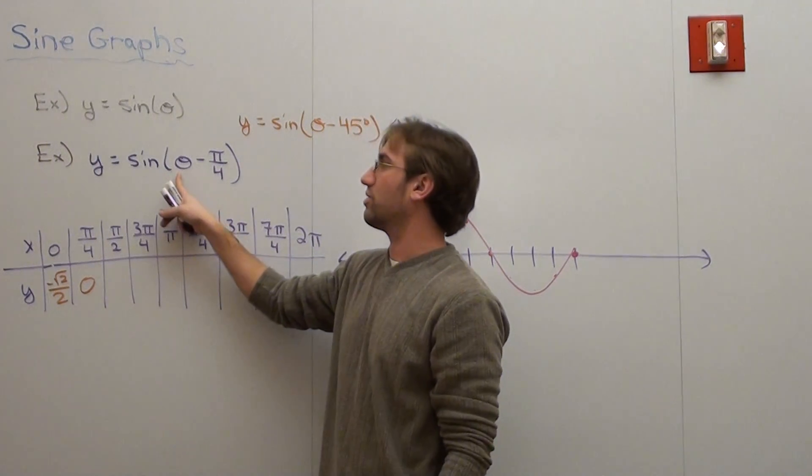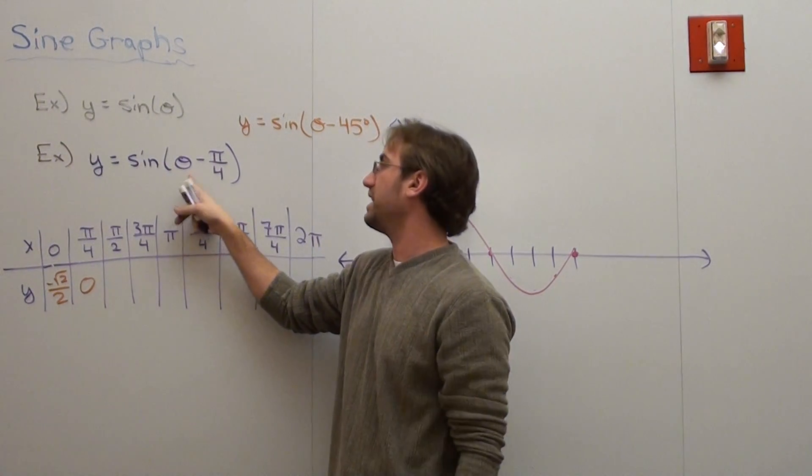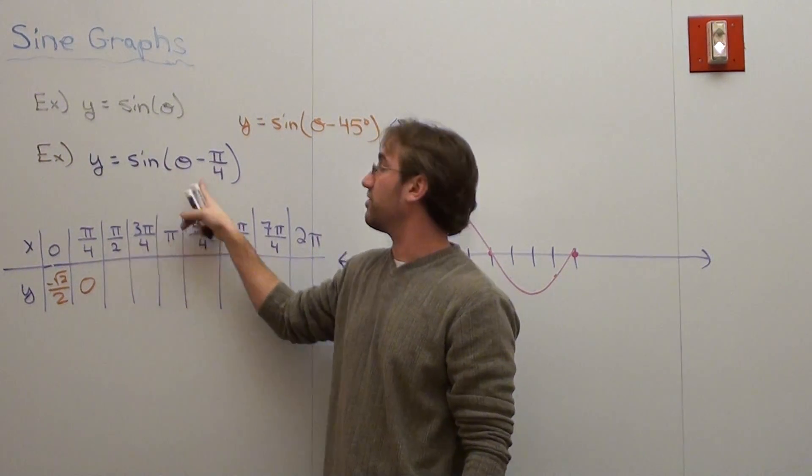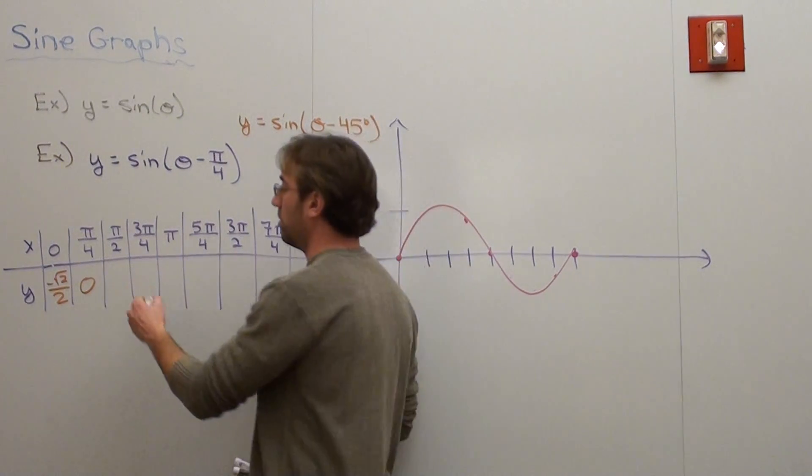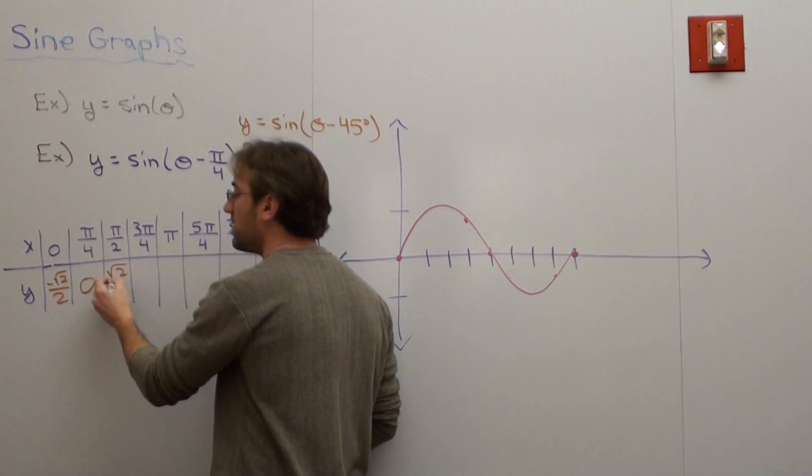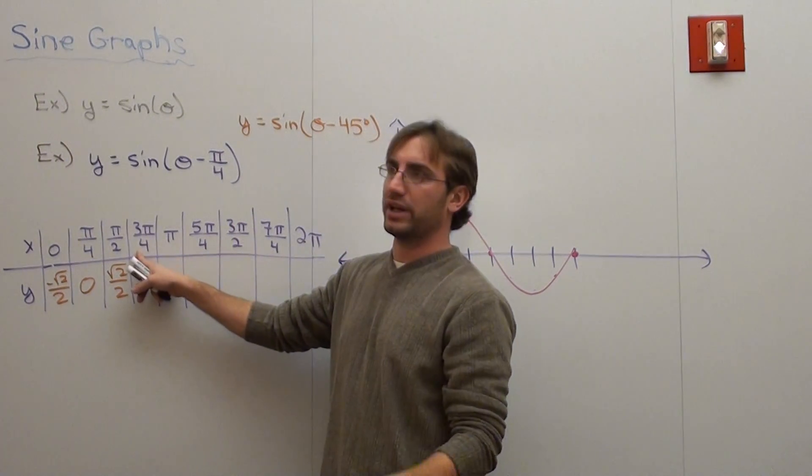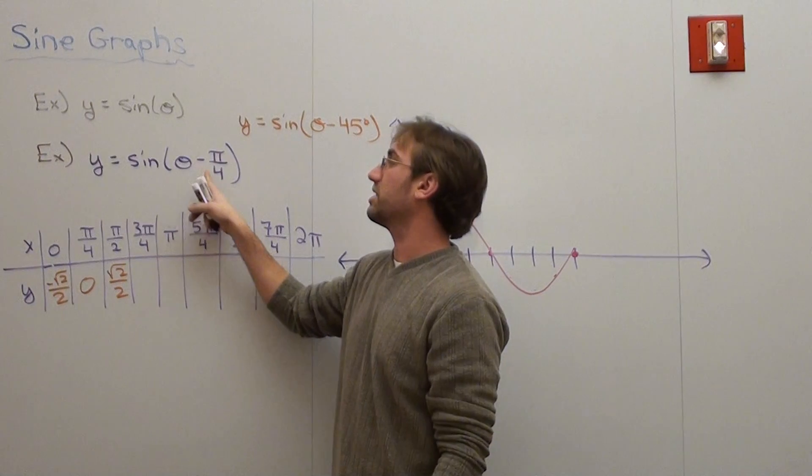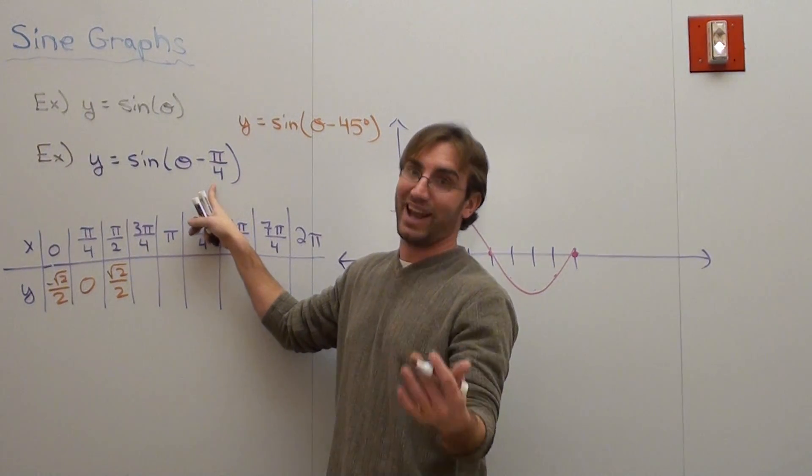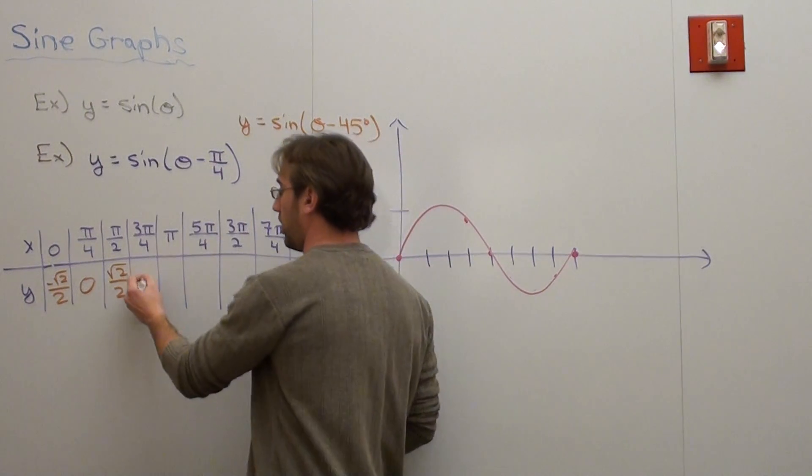If we put in pi over 2, that's 90 minus 45. Sine of 45 is root 2 over 2. Okay, maybe this is making sense. 3 pi over 4 is 135 degrees. 135 degrees minus 45 degrees is 90. Sine of 90 is 1.